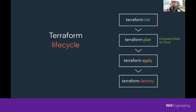Terraform has a simple lifecycle: Terraform init downloads all the Go packages and provider stuff behind the scenes. Then you run Terraform plan, which takes your state and compares your code to the cloud, showing you what it's going to do — delete, create, or other operations. If you find the plan acceptable, you apply the code and it actually changes the cloud. And if you want to destroy everything, you can use Terraform destroy.